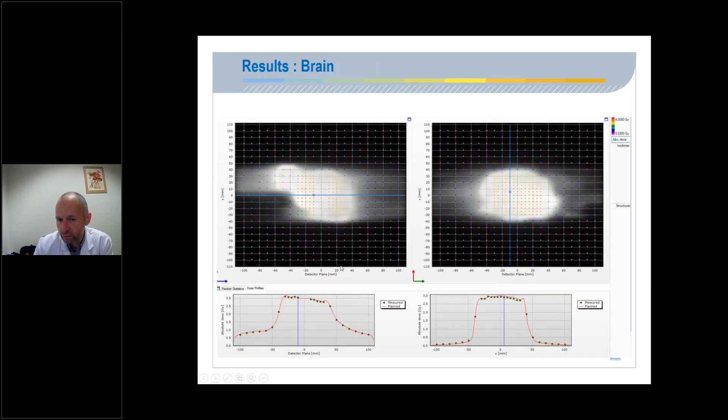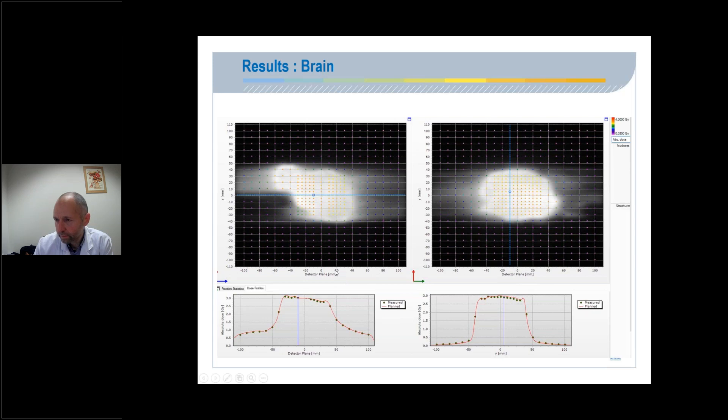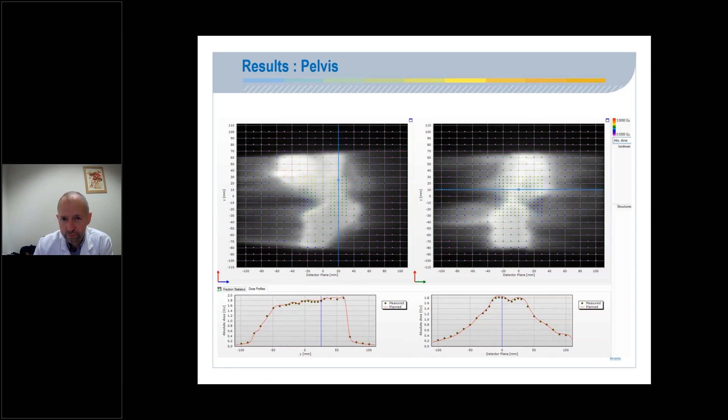For the brain, we obtain similar results in all profiles, vertically and horizontally. And for the pelvis, we have also good profile and good agreement between measured and planned dose. We can conclude that the junction area is quickly taken into account by the TPS and by the machine. Here, this is the rear area of the junctions.